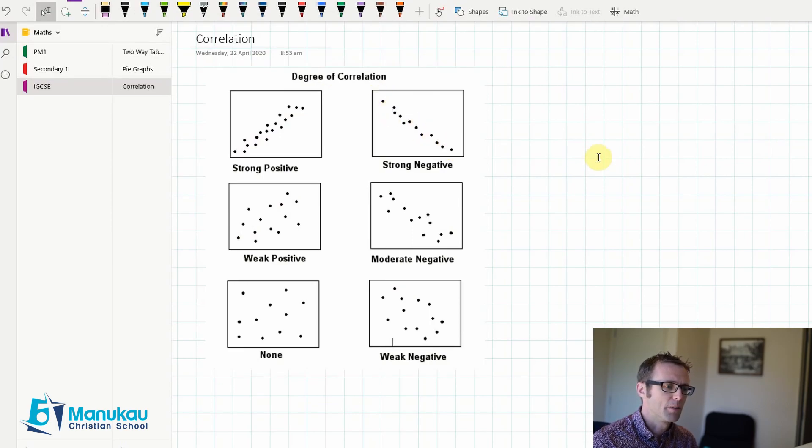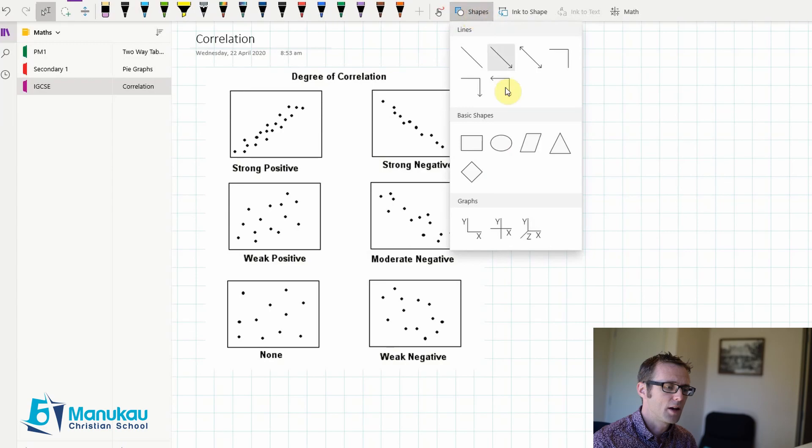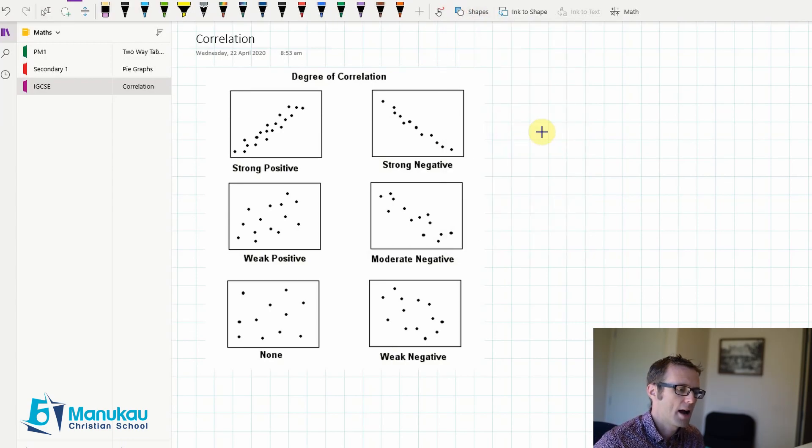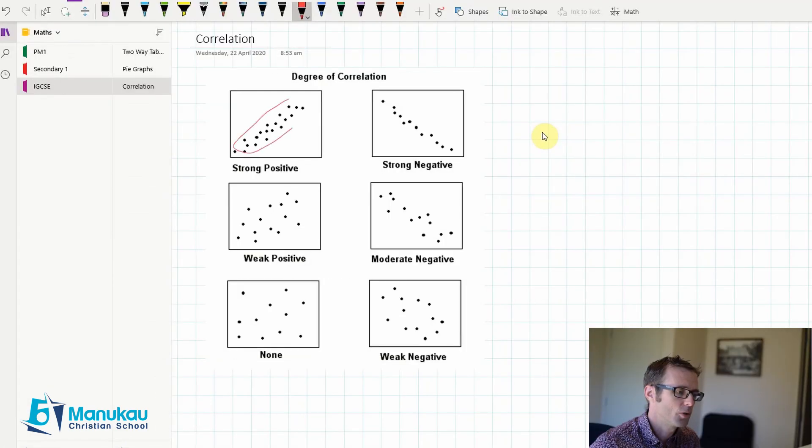And then the strength of something depends on how closely together the data is gathered. So, you can see if we look at this, this data is all gathered quite closely to a sort of a center line here. You can see it's not too far away on either side. Whereas this data here is a little bit further away from that sort of center.